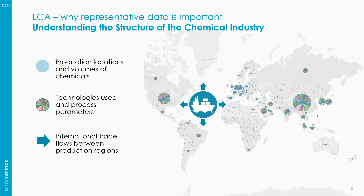Chemicals are typically produced using different production technologies, so we need to understand which technology is used at each production site. For that, we need detailed technical models of each technology to determine the inputs, outputs, and emissions in every single chemical plant. Furthermore, we need to understand how chemicals are traded globally, as international trade interconnects the different production sites so that supply chains in different regions depend on each other.